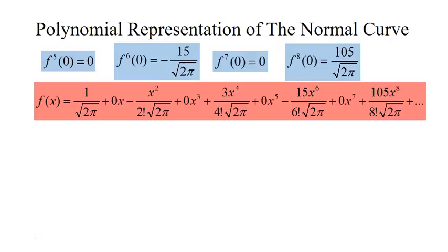Plugging into the McLaurin polynomial formula: we have 1 over the square root of 2 pi for the constant term; the coefficient for the next term is 0; negative 1 over the square root of 2 pi is the coefficient for x squared, divided by 2 factorial; the x cubed term is 0; then 3 over the square root of 2 pi times x to the 4th over 4 factorial; the 5th coefficient is 0; the 6th is negative 15 over the square root of 2 pi; the 7th is 0; and the 8th is 105 over the square root of 2 pi. Notice that every other term is 0.